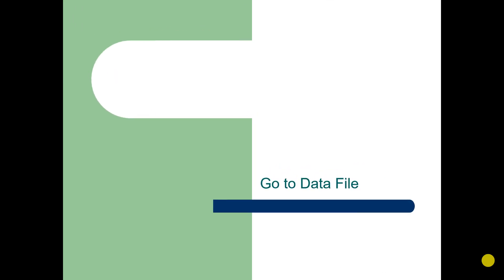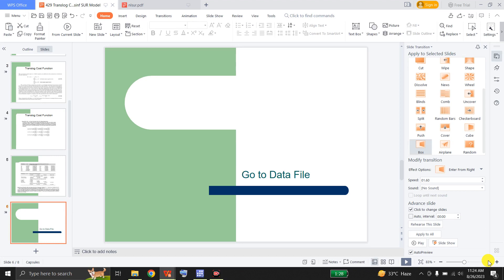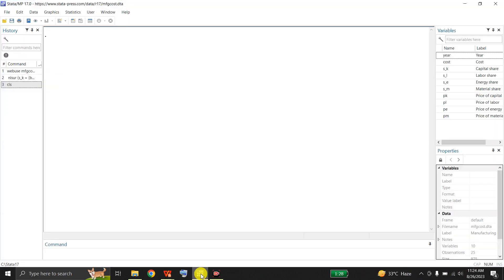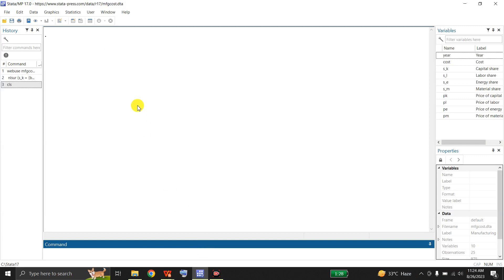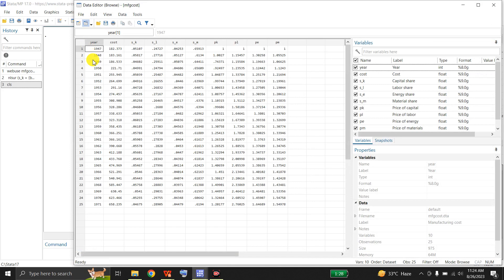We will also estimate the non-linear seemingly unrelated regression for the same data in Stata. To do that, I will open my data file. Here is the file. First of all, I would like to show you the data, and here is the data.